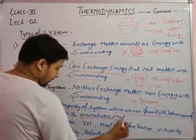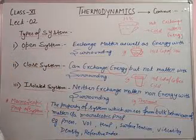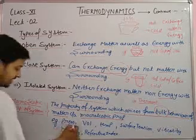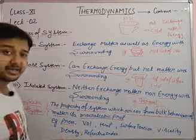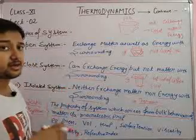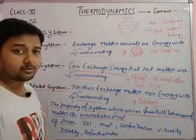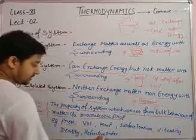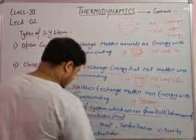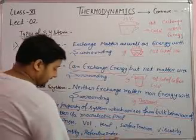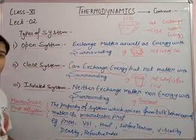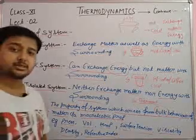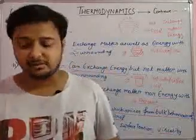For examples, what comes inside the macroscopic properties of the system? Pressure will not be created by a single gas molecule - pressure will be created by a huge amount, a bulk amount of gas molecules. Then it will create pressure, volume, temperature, surface tension, viscosity, density, refractive index. These all are the examples of macroscopic property of the system. I hope you understand these things. Thank you class.